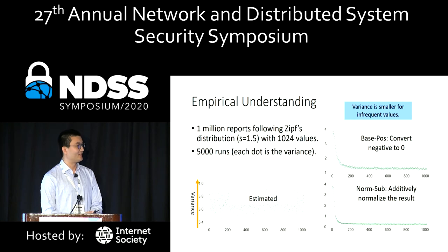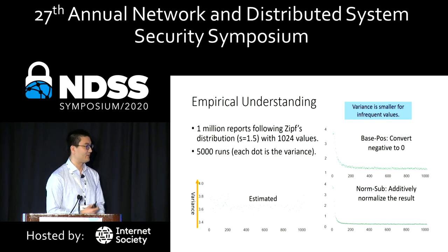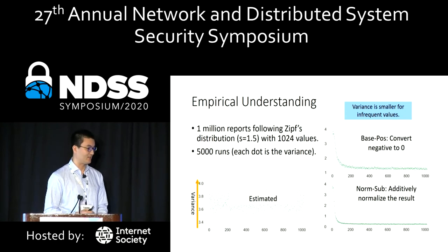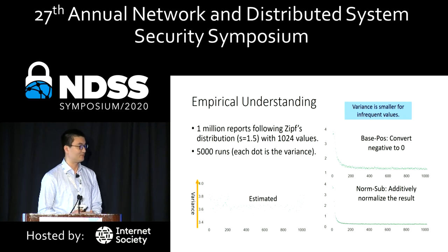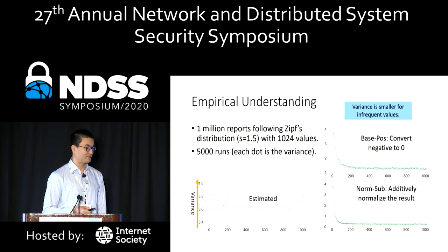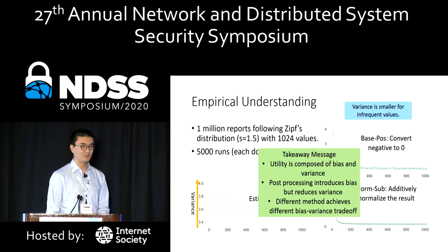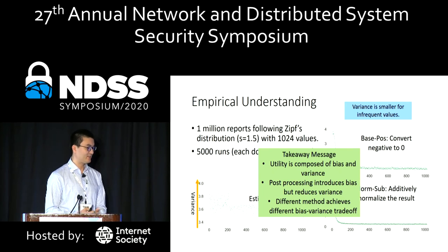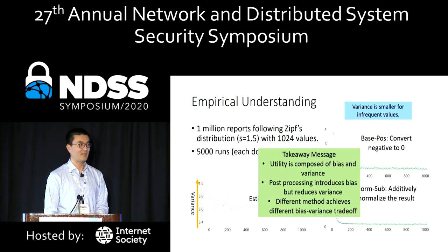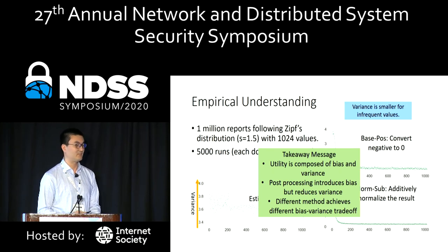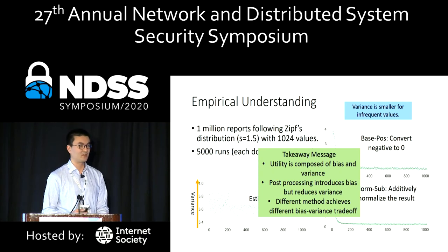We know that bias is generally undesirable in estimation. However, post-processing prevents some impossible events from occurring. So both factors — bias and variance — come into play. The next slide shows the variance of the post-processing methods versus the original method. In the original method, variance across 5,000 rounds is high due to the large noise in LDP. After post-processing, variance is smaller, especially for infrequent values. The takeaway is that utility is composed of bias and variance, and post-processing inevitably introduces bias but also reduces variance. Different methods represent different trade-offs between bias and variance.